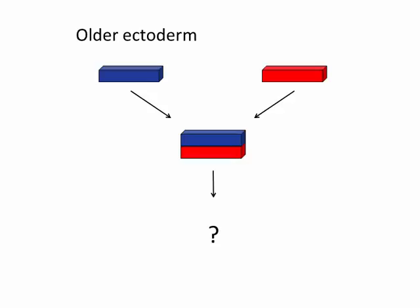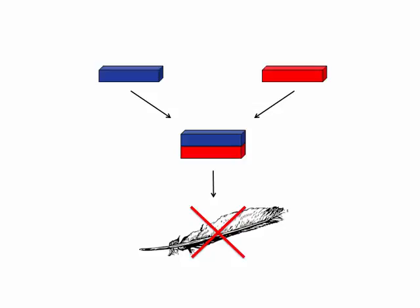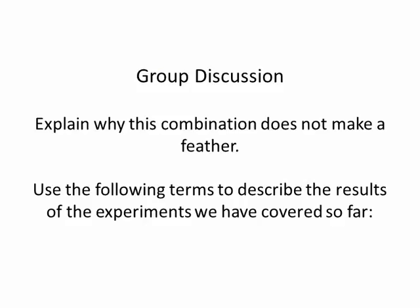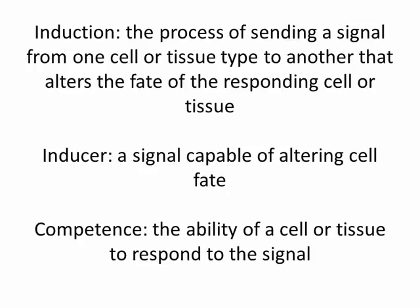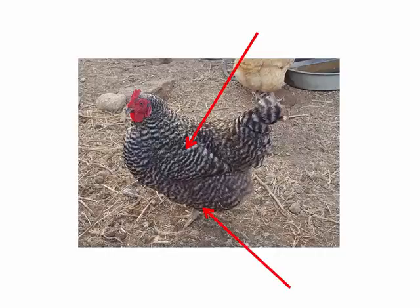Does this result mean that the type of ectoderm doesn't matter? When an older or younger ectoderm is recombined with the mesoderm used in the previous experiments, it doesn't make a feather. Explain why this combination doesn't make a feather, then use the following terms to describe the results: Induction — the process of sending a signal from one cell or tissue type to another that alters the fate of the responding cell or tissue. Inducer — a signal capable of altering cell fate. Competence — the ability of a cell or tissue to respond to the signal.